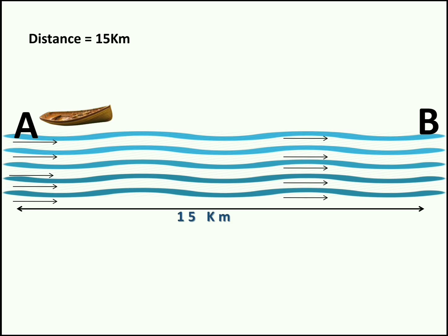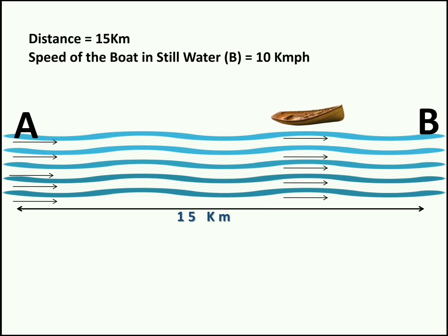We shall keep the speed of the boat in still water as 10 kilometers per hour. Speed of boat in still water is nothing but the speed of the boat — here it is 10 kilometers per hour. Now, what is still water? Still water means there will not be any movement in the water. For example, we can take the case of boating in a lake. Lake water does not have any speed, so here the speed of the boat is 10 kilometers per hour.